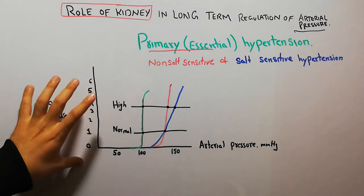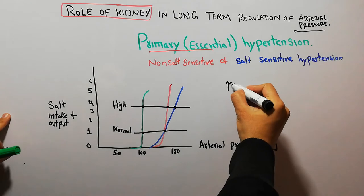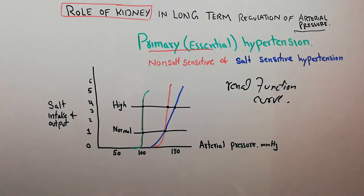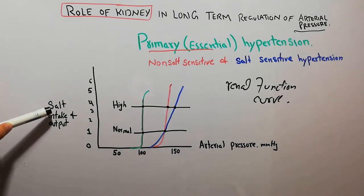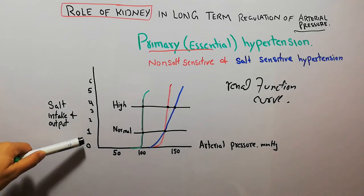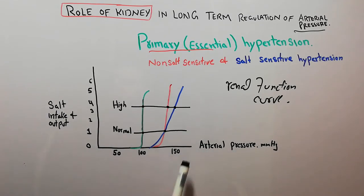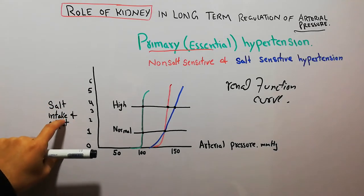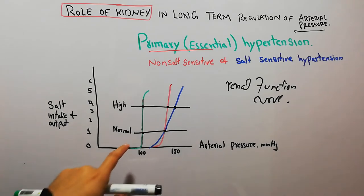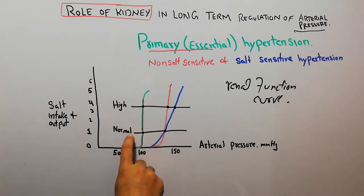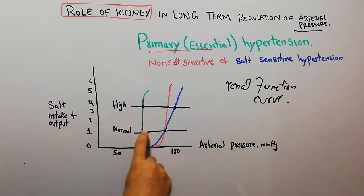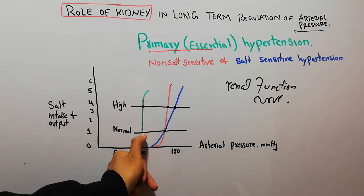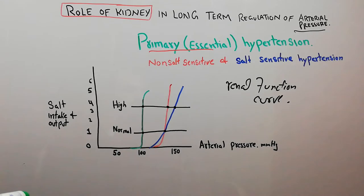We have previously discussed the renal function curve in detail. In the renal function curve, we plot the intake and output of salt on the y-axis and the arterial pressure on the x-axis. The point at which the intake of salt equals the output of salt — where both of these meet — is normally considered the normal arterial pressure level.